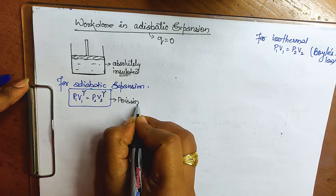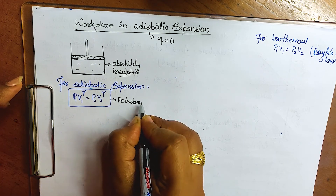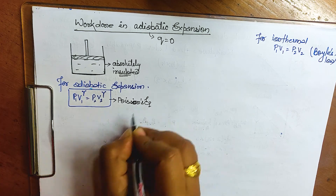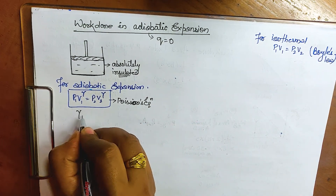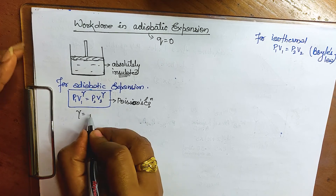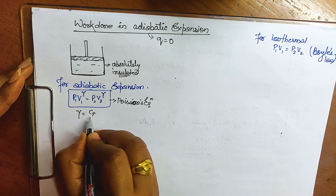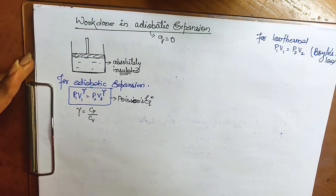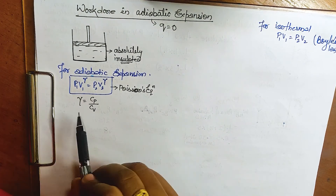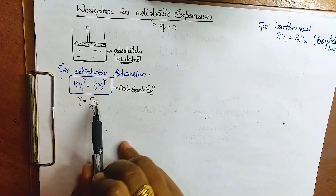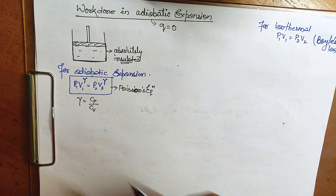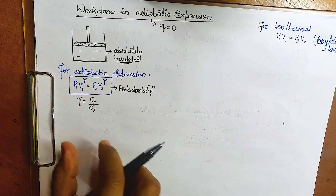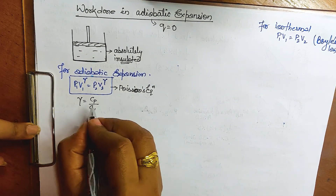In this equation, gamma (γ) is Cp divided by Cv. You might ask what Cp and Cv are — we will cover heat capacity at constant pressure and at constant volume in a future lecture. For now, keep in mind that gamma gives the atomicity of the gas.